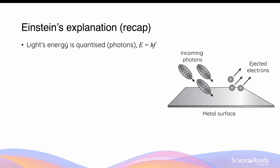Einstein's quantum model was developed to explain the observations made by Lenard when he produced the photoelectric effect by shining light of different frequencies as well as intensity on a metal surface. In the quantum model, Einstein explains that light energy is quantized, meaning that it's divided into discrete packets of energy called photons, and the energy of a photon can be calculated by multiplying Planck's constant and the frequency of the light.